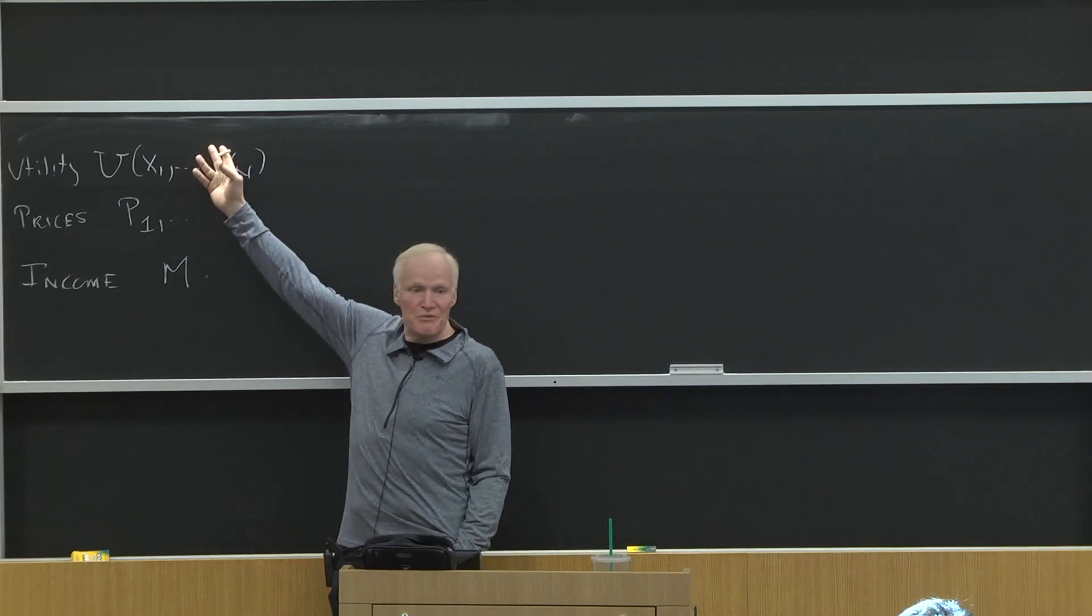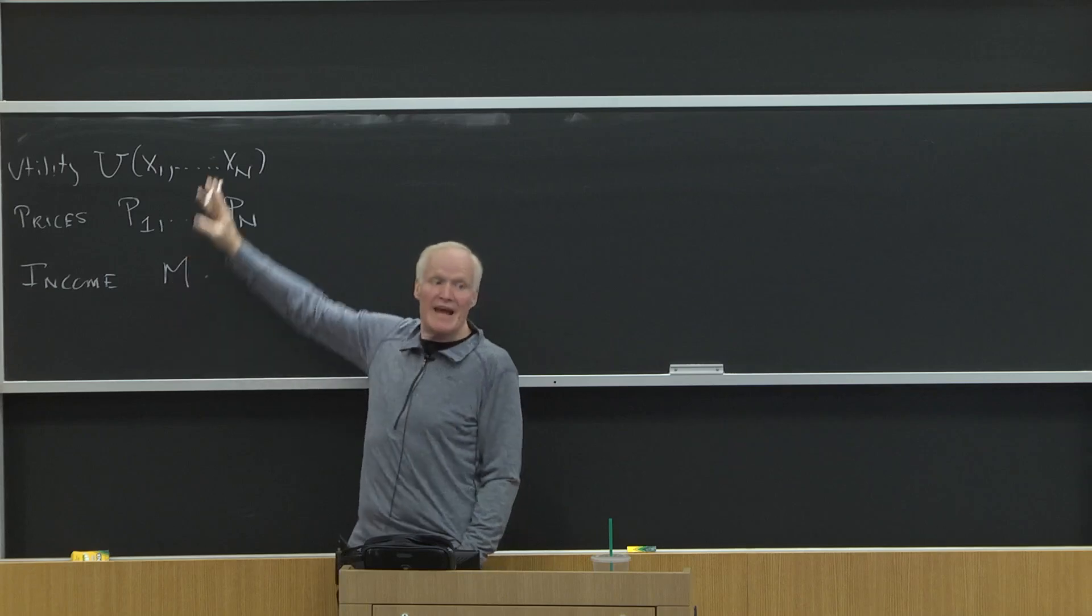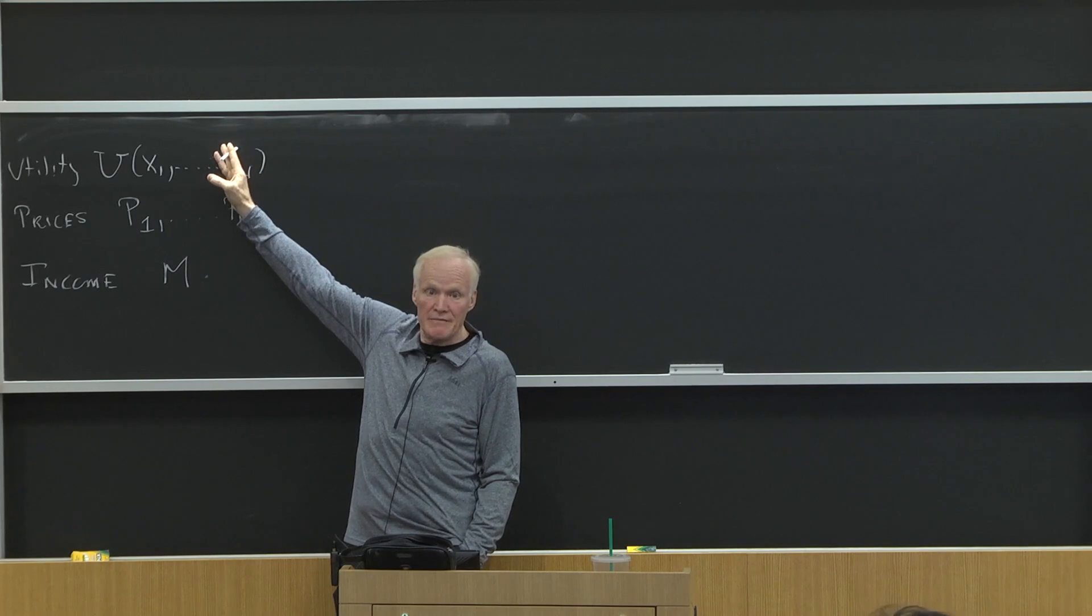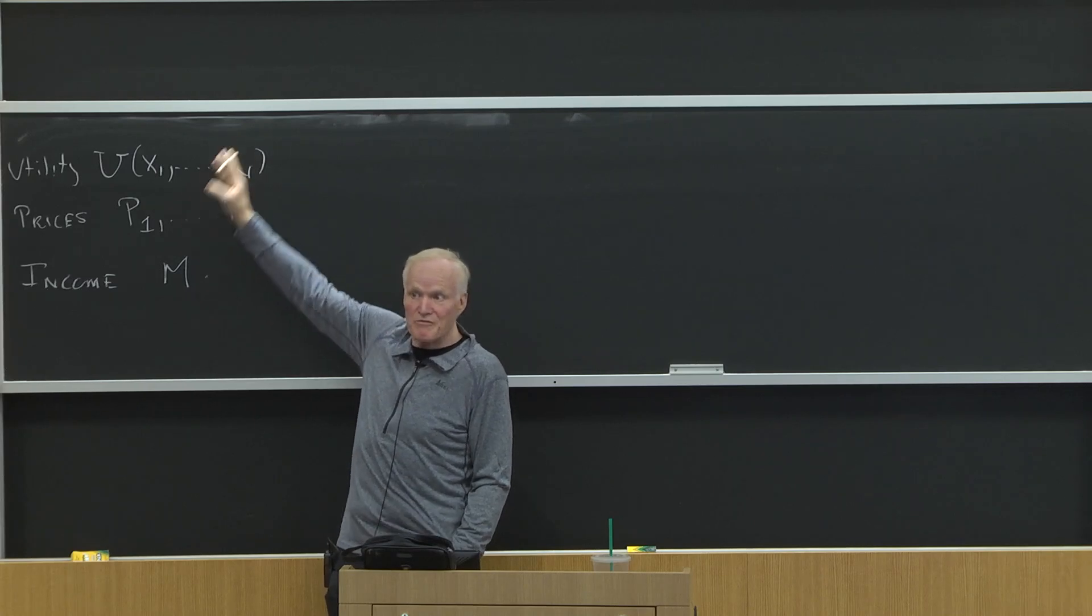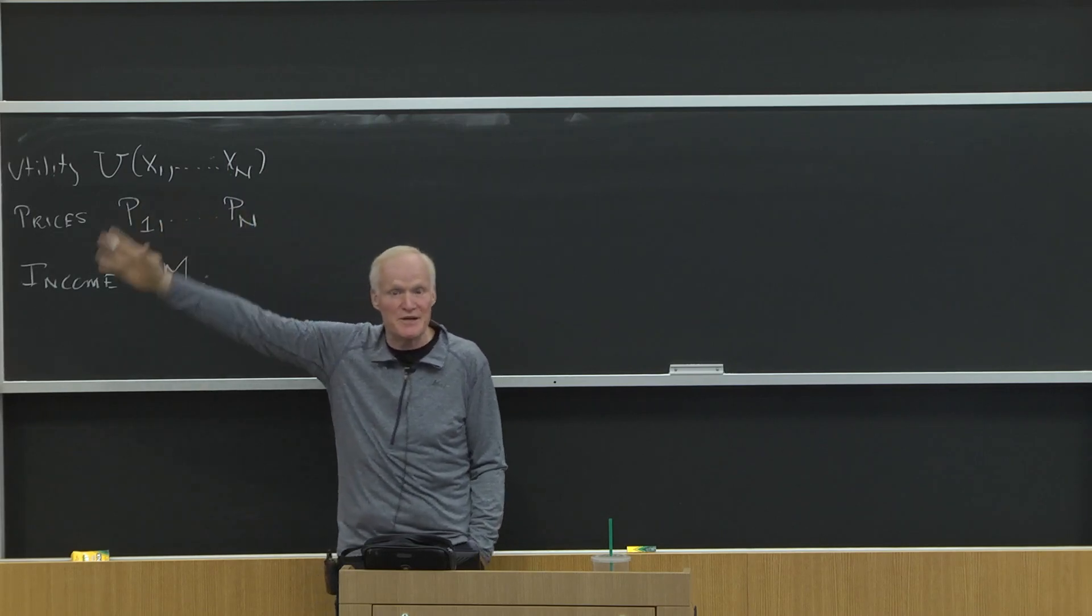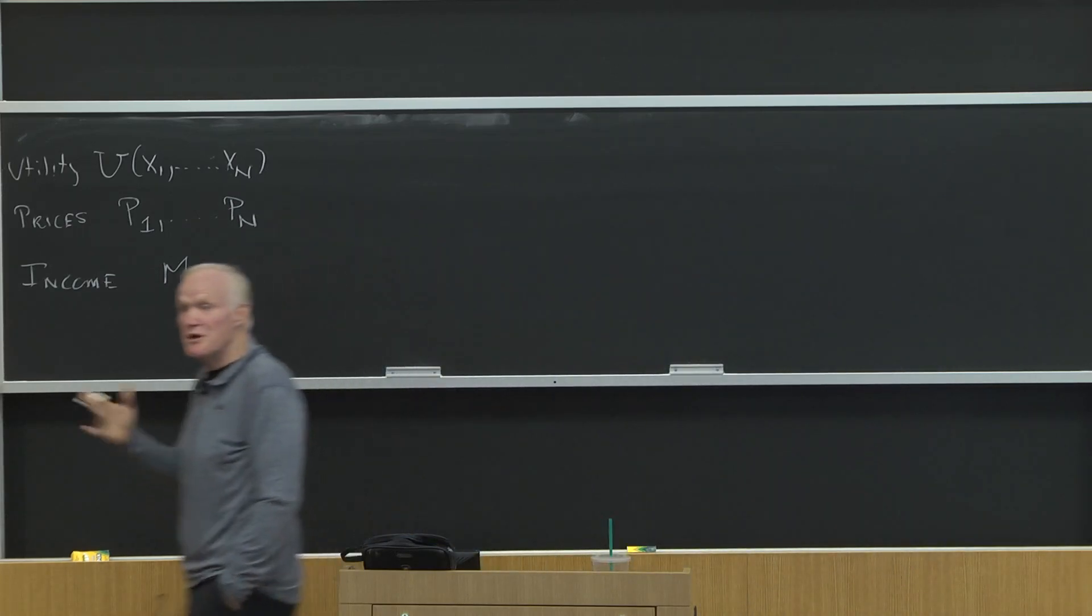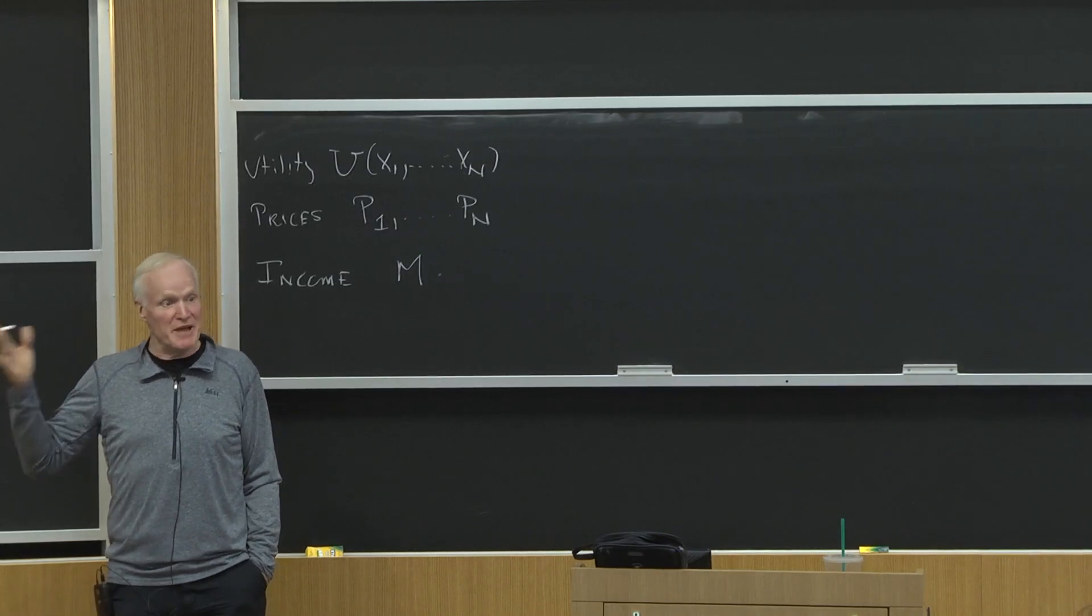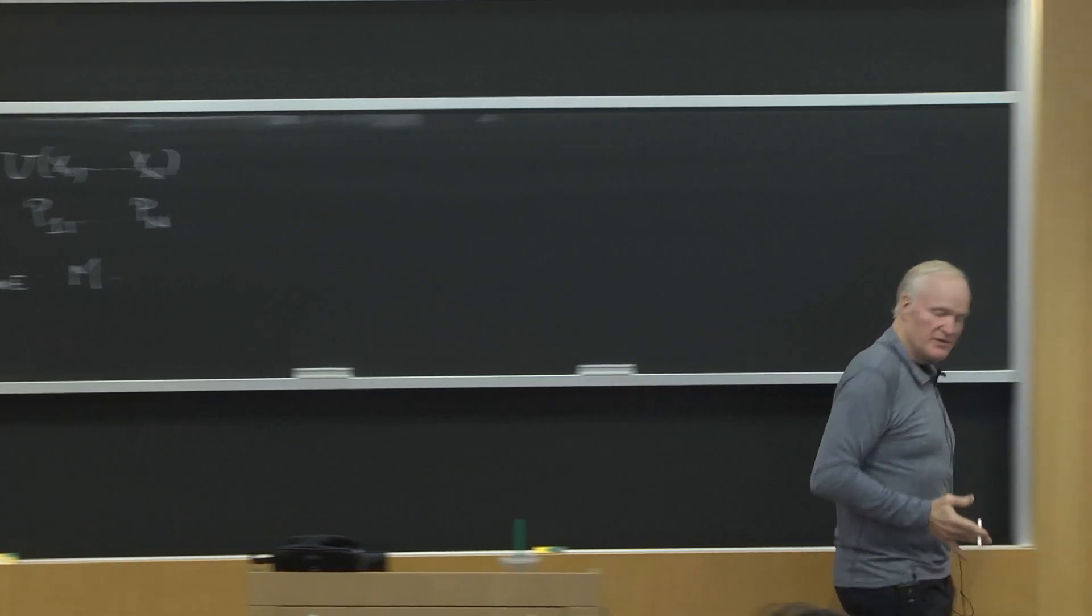So if M is income per week, then X is going to be consumption per week. M is income per year, X is going to be consumption per year. Anybody who comes from the physical sciences, remember, you always check that your units made sense across the two sides of your equations. This is the same thing true in economics. Units have to make sense. You'd be amazed at how many people, when they go to do empirical work, forget that they have to use the same units on both sides. You've got to measure things in the same units.